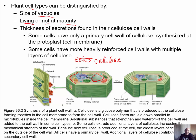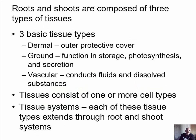Some cells have only a primary cell wall, which is the first cell wall laid down and is not very thick. In other cells, after the primary cell wall is produced, more cell wall is made — the secondary cell wall — creating a much stronger and more rigid structure. These differences in cell wall thickness are among the ways we can distinguish among cell types found in plants.